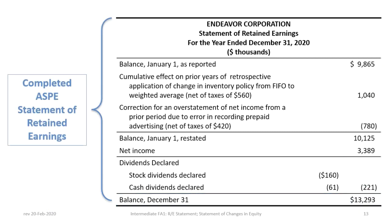Here we have our clean statement with no markings — this is the completed statement of retained earnings for Endeavor Corporation reported under ASPE. Please make sure you can trace back all calculations to the original data and are comfortable with how this statement was prepared, as this will help you before moving on to the IFRS statement of changes in equity.